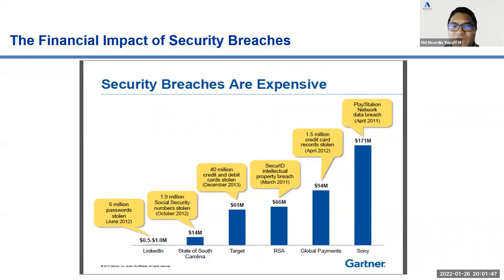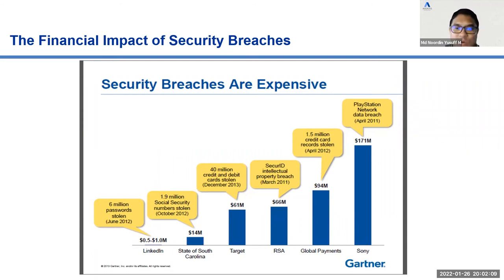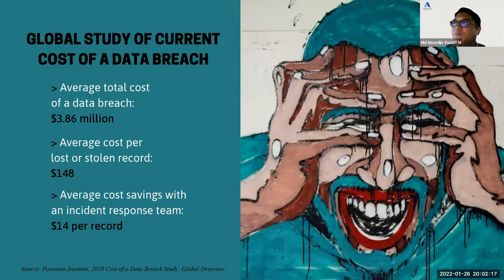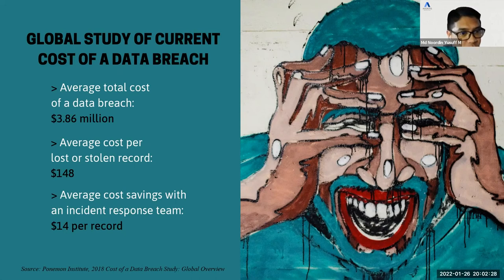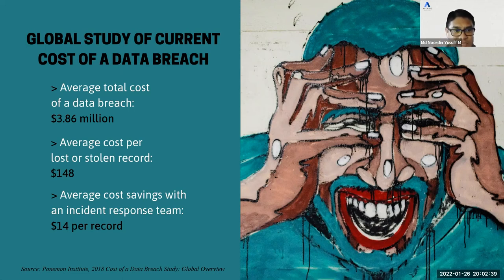Security breaches are expensive. The financial impact can include legal fees, reputational damage, and lost business. The average cost of a data breach globally is $3.86 million, and the cost per lost or stolen record is $148. However, if you have an incident response team in place, the cost savings are $14 per record.